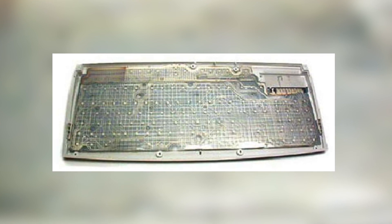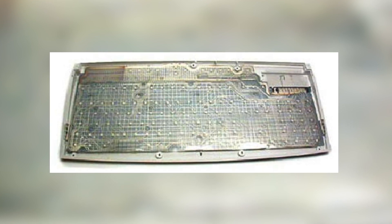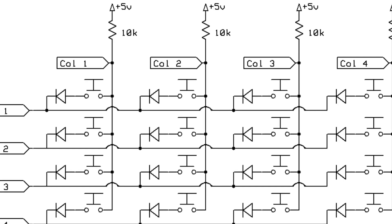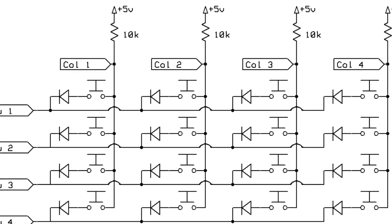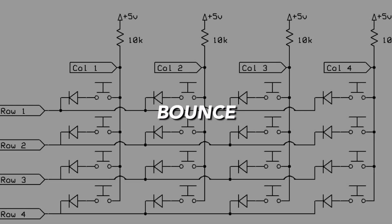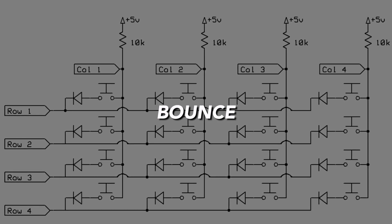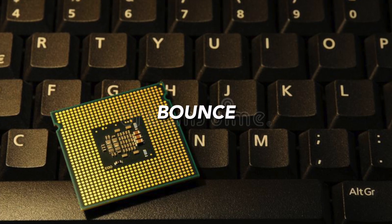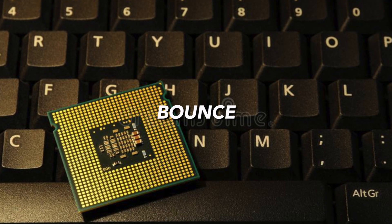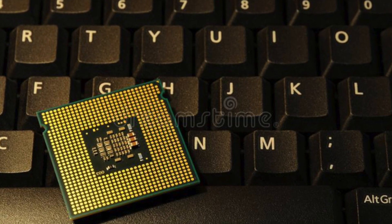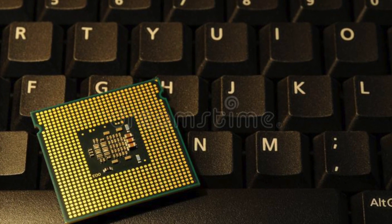When you press a key, it will press a switch and the current flows in. This causes vibration called bounce, which is filtered by the processor. The processor can also recognize if you hold the key, the same as rapidly pressing the keys multiple times.